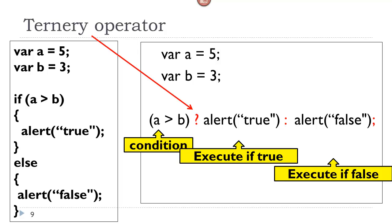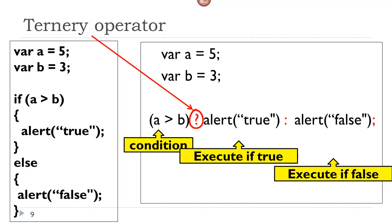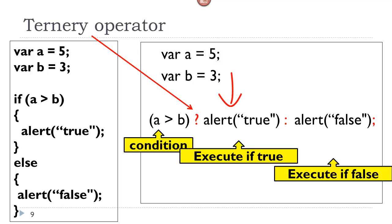So let's take a look on the right-hand side. Here we have the same variables — a equals five, b equals three. Rather than using the if keyword, we just have a condition: a is less than b. And now we have this question mark, which is called the ternary operator. If the condition evaluates to true, the first block of code following the question mark will be executed. If the condition evaluates to false, the code following the colon will be executed. So if it's true we execute this one, if it's false we execute that one.